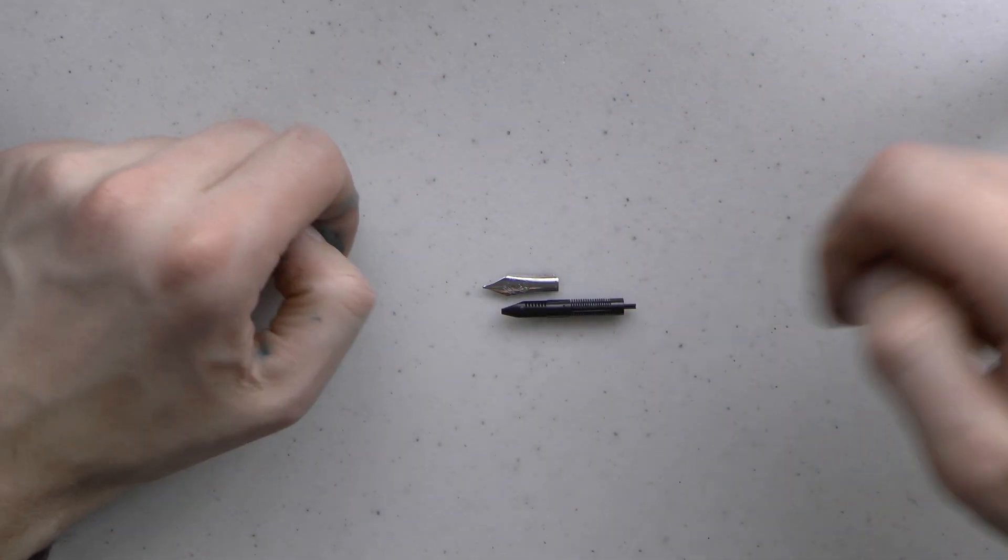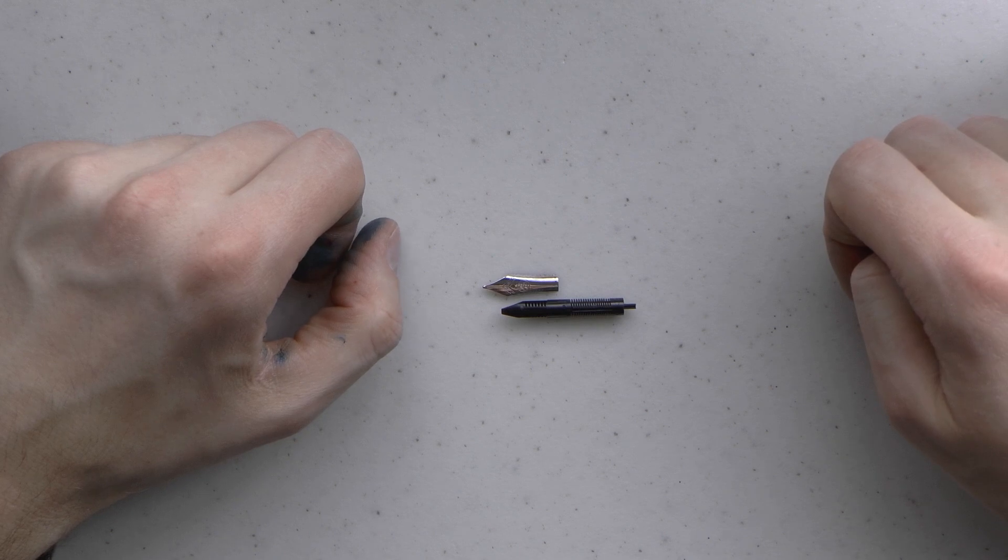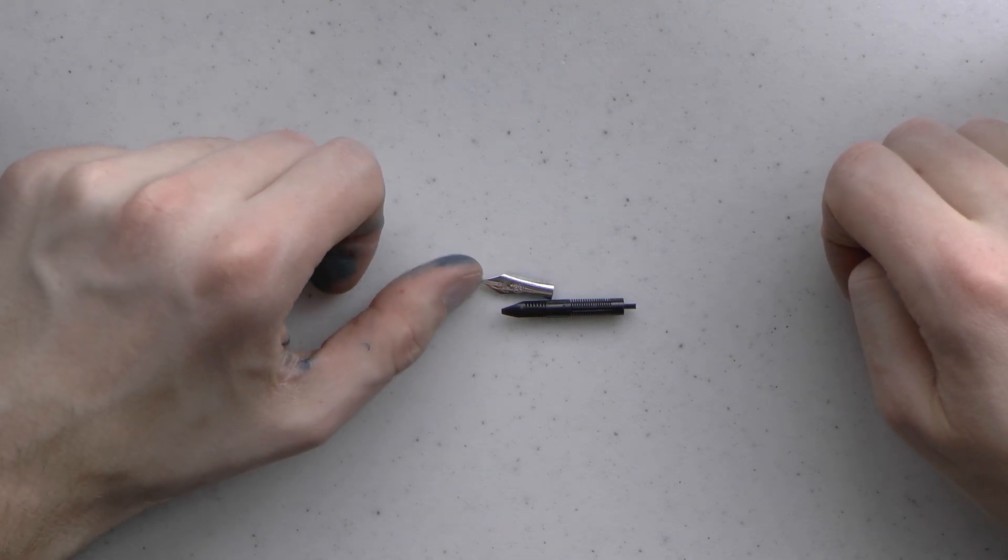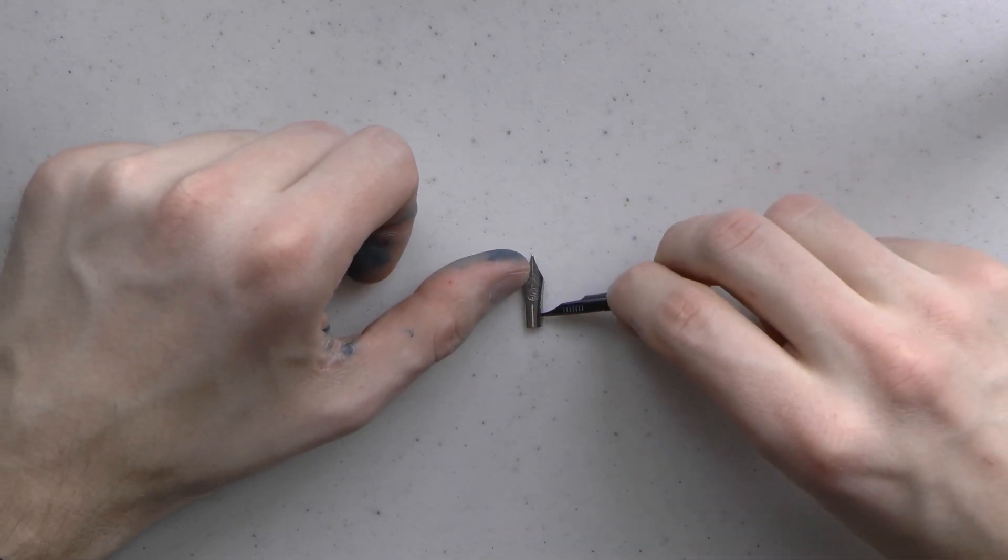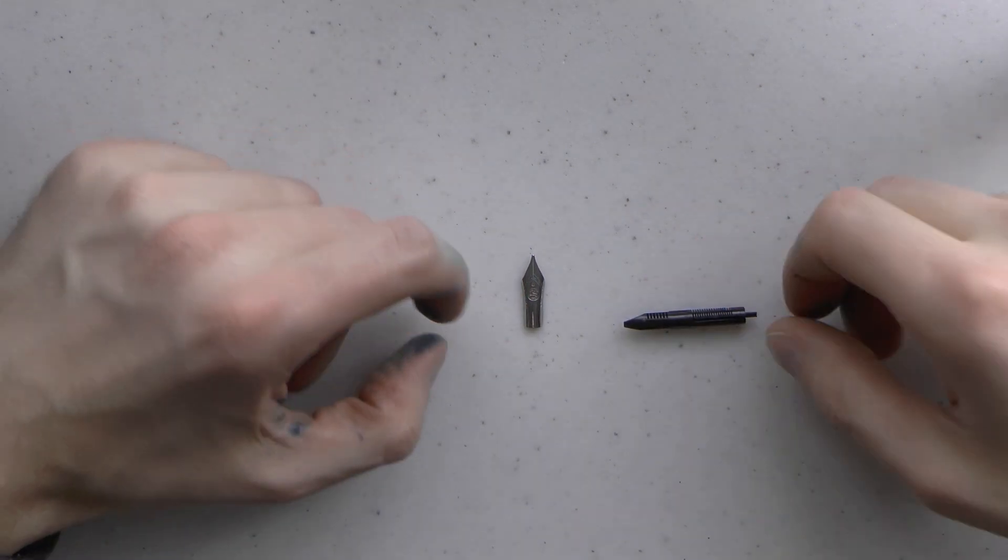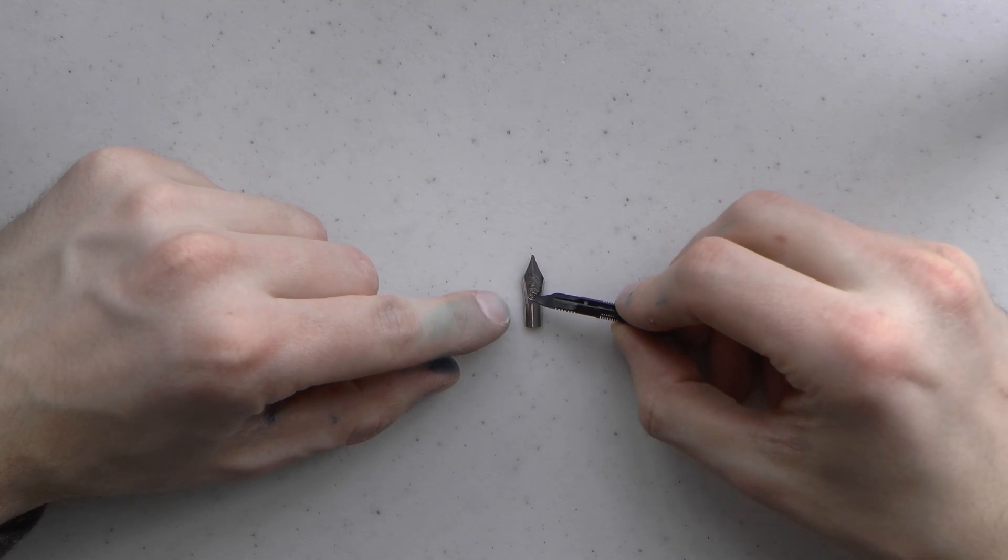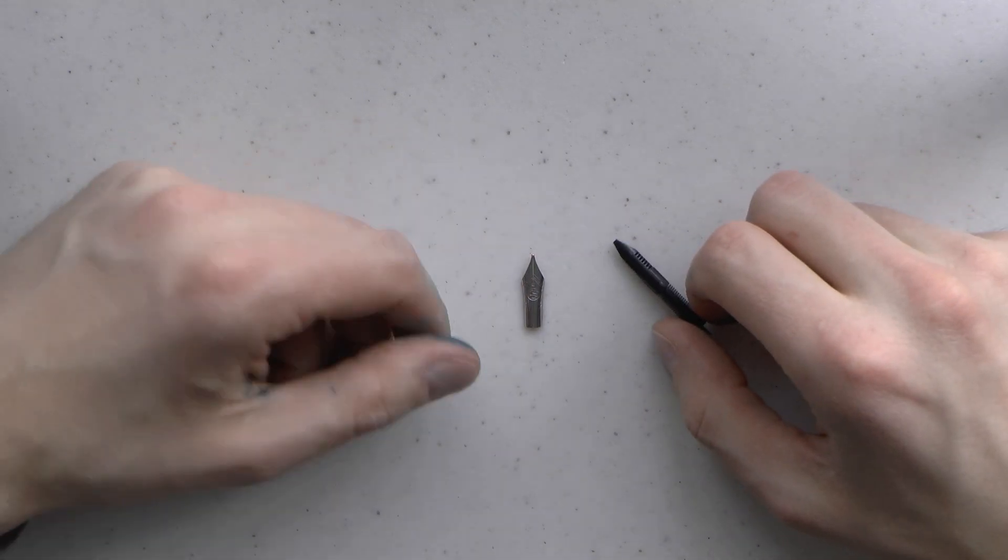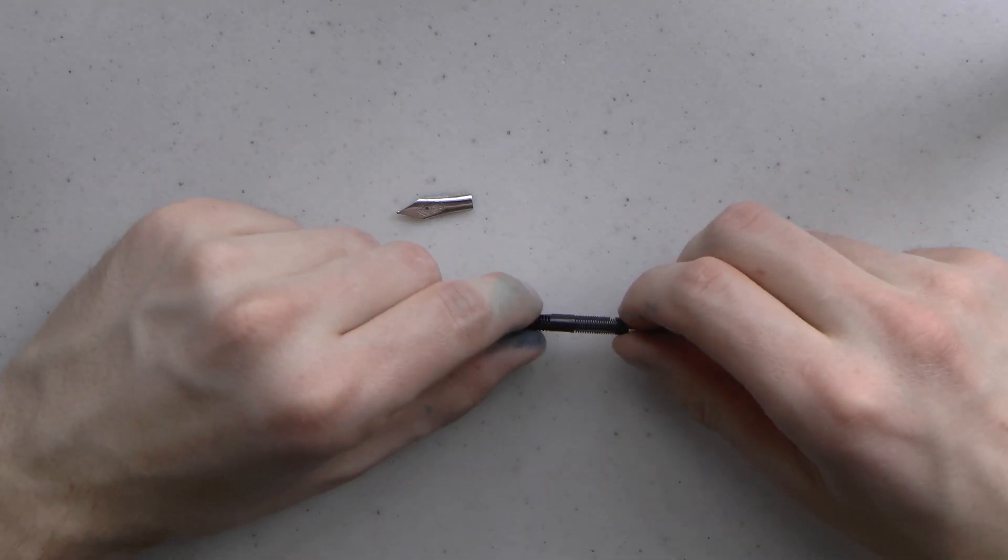And when I say this is a number five nib, how do I know that? Well, first of all, what I know is that this is a Bock nib. And the reason I know there are two big nib manufacturers in the world, Bock and Jowo. The way I know this is a Bock is that it actually has that animal on here. So I can already tell.